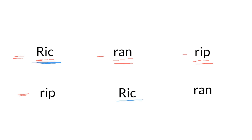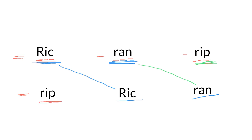Yes, it's this one. So we need to match them and align. Now let's take a look at the second word: ran. Where is the word ran on the second row? Point to it please. Yes, this one. So we join them with a line. The last word: rip. Where is the word rip on the bottom line? Point to it please. Yes, this one. So we join the word rip with rip. Well done everybody.